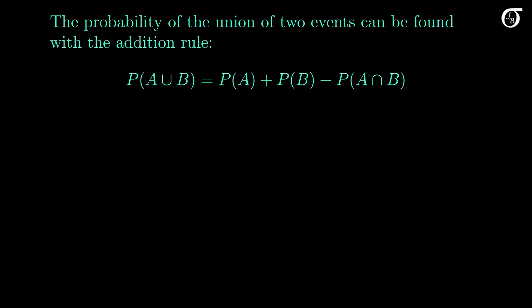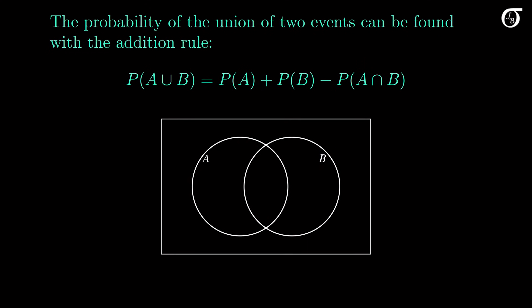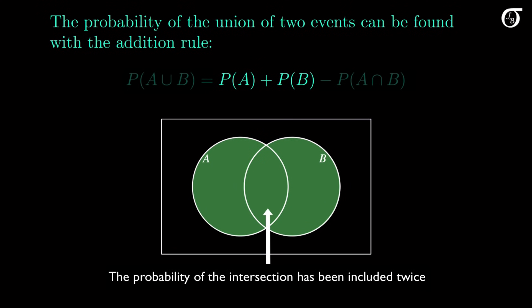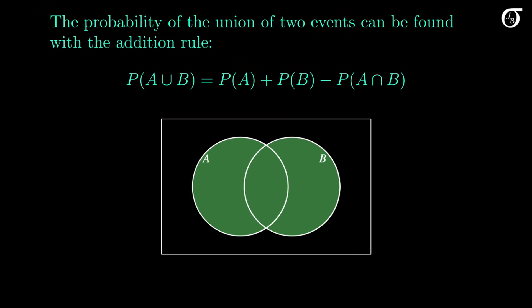The probability of the union of two events can be found with the addition rule. The probability of the union of A and B is the sum of the individual probabilities, minus the probability of the intersection. If we add the probability of A to the probability of B, we've added the probability of the intersection twice, because it occurs in both A and B. The probability of the intersection should only be included once, so we subtract one of those — and that end result is the addition rule.